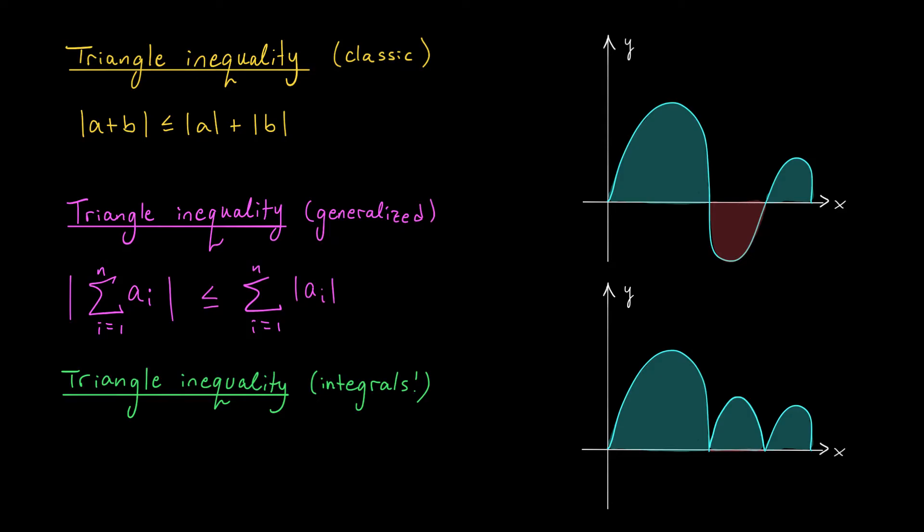This is the version of the triangle inequality that we're going to need. Since we often think of an integral sort of like a big infinite sum, our triangle inequality is going to look just like this, but for integrals. It says that the absolute value of the integral from a to b of f(x) dx is less than or equal to the integral from a to b of the absolute value of f(x) dx.